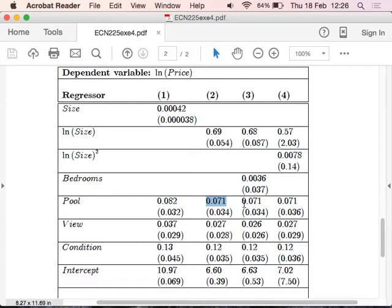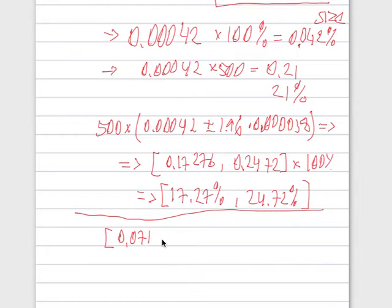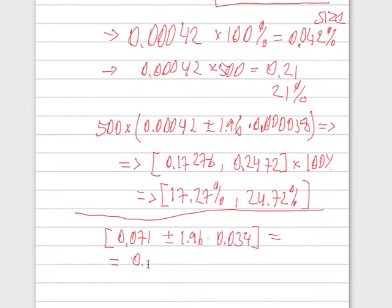Constructing a 95% confidence interval is not that difficult. When you construct 95% confidence intervals, use the fractions before. Use coefficient estimates as given. With 95% probability the true value will be between these two confidence bands.